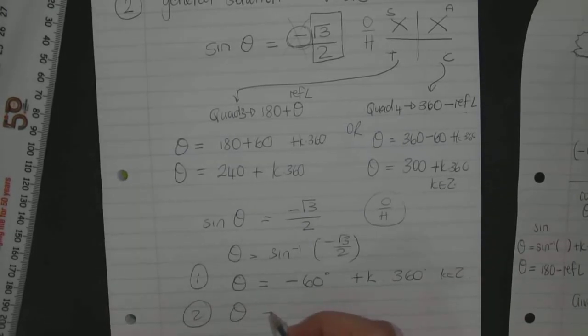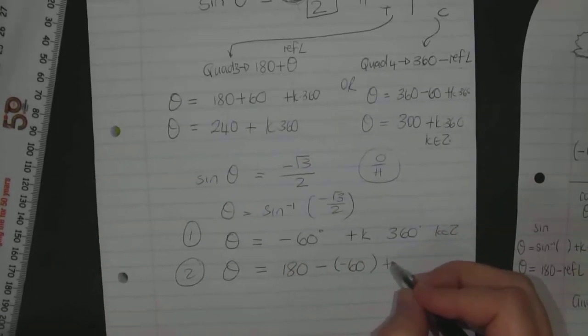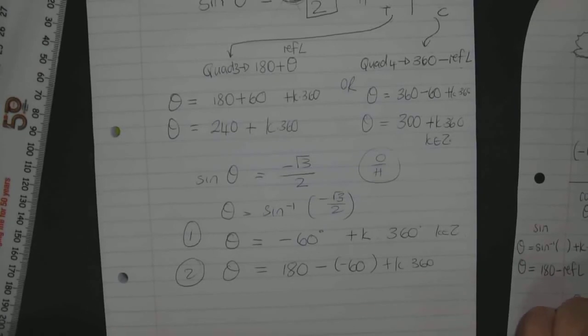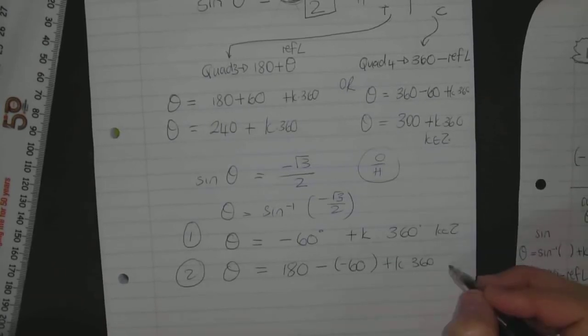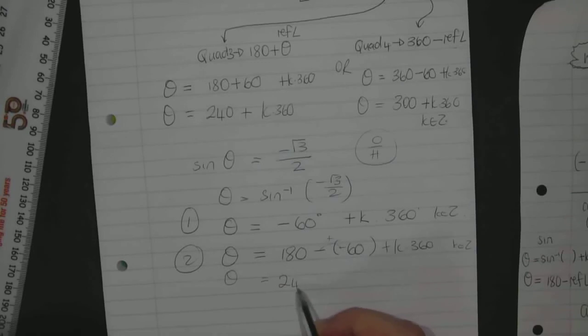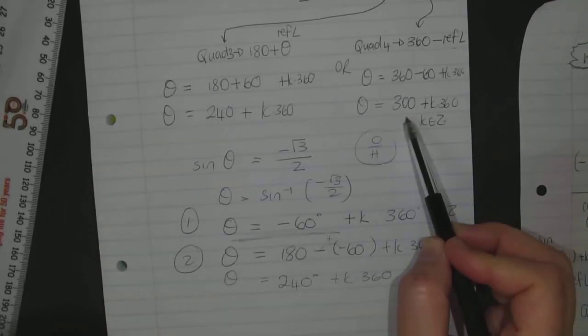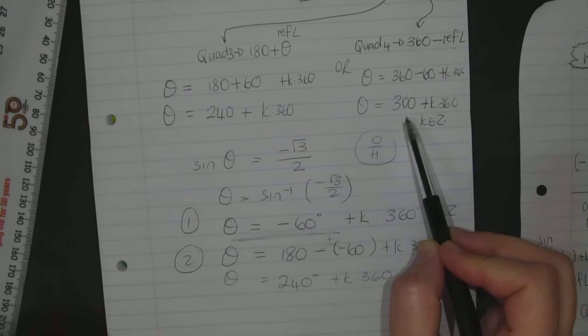My second one will be 180 minus minus 60 plus K times 360. And K is part of integers. And a minus and a minus is a plus. So I get 240 plus K times 360. So now you're going to say to me, but man, you didn't get minus 60. You got 300. What did we do previously when I get negative angles? What do I add? Add 360. And what is minus 60 plus 360? 300.